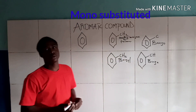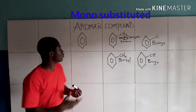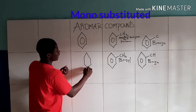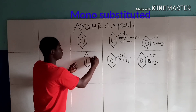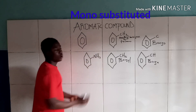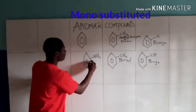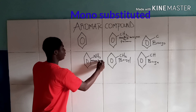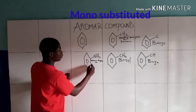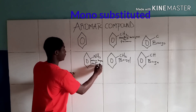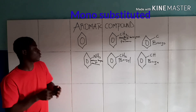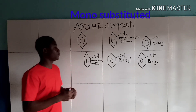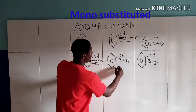Another monosubstituted benzene derivative is a benzene group attached to NH2. This is called aminobenzene, also known as aniline. Aniline is used for making drugs.